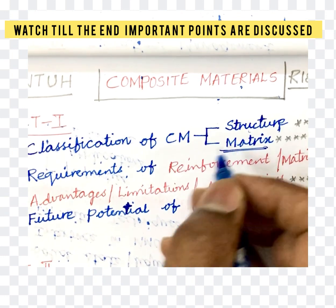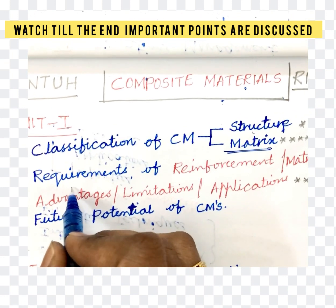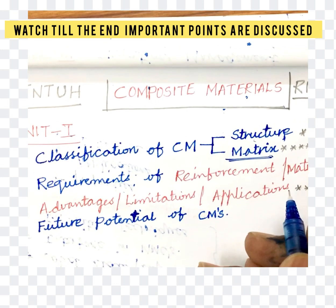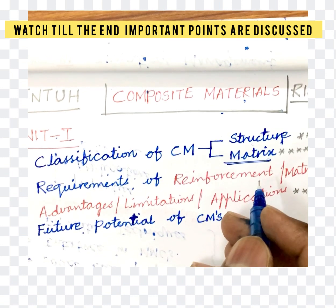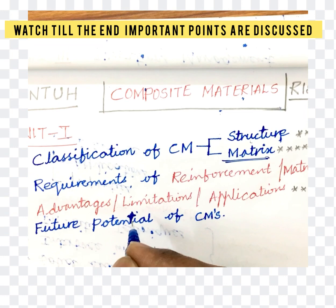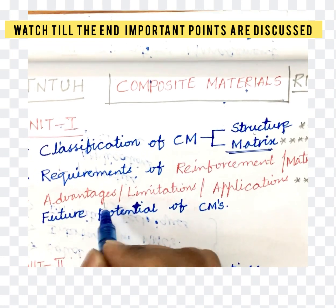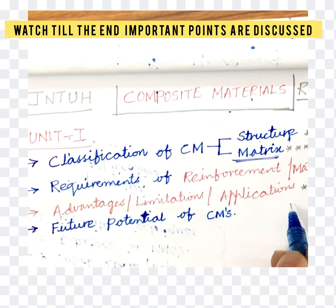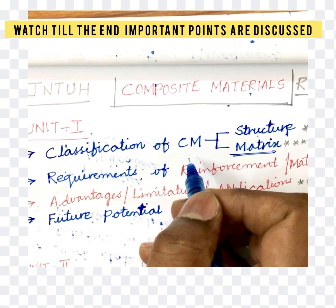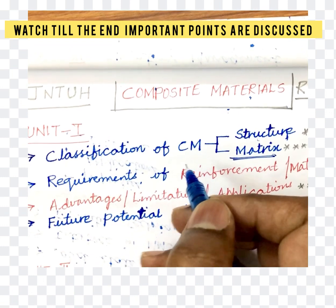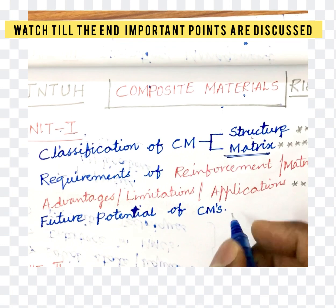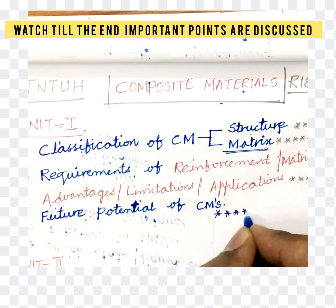Make sure to draw diagrams wherever required. The requirements of reinforcement as well as the requirements of matrix is also one important question. Advantages, limitations, and applications of composite materials are also covered. The first unit is very important — you must read this unit to understand the later units. The future potential of composite materials is also one important question asked for 5 marks.